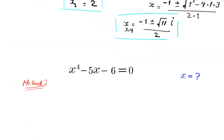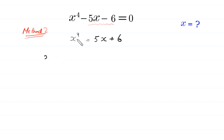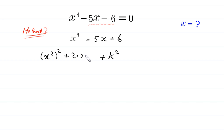Now let's solve this equation by Method 2. We move the two terms negative 5x and negative 6 to the right-hand side, so this becomes x to the power 4 equals 5x plus 6. We make the left-hand side a perfect square by writing x to the power 4 as x squared whole squared, then adding k squared, where k is a constant.